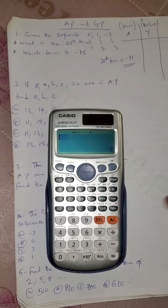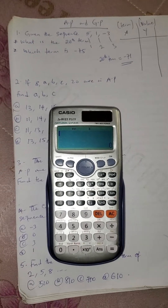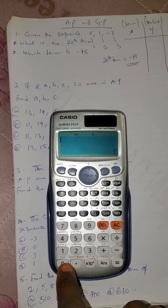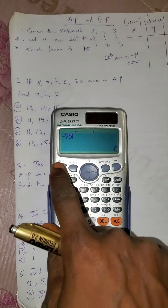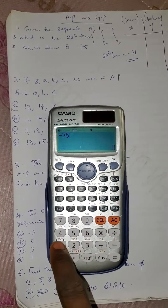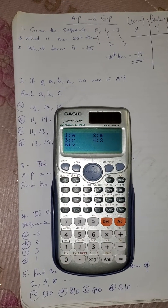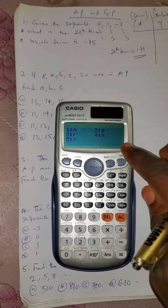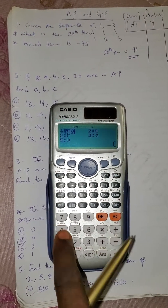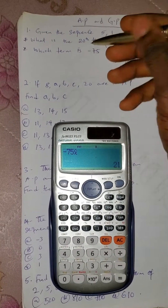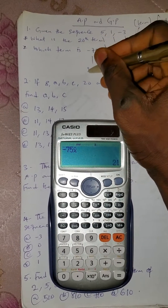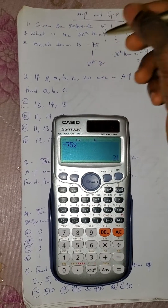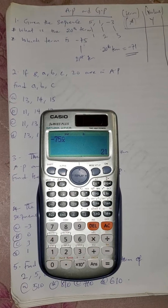Press AC. The next part of the question asks which term will equal minus 75. Press minus 75, then press shift 1, go to reg. Since we want to find which term number, we use x which is number 4. Press equals, and the answer is the 21st term. So the 21st term gives us minus 75.